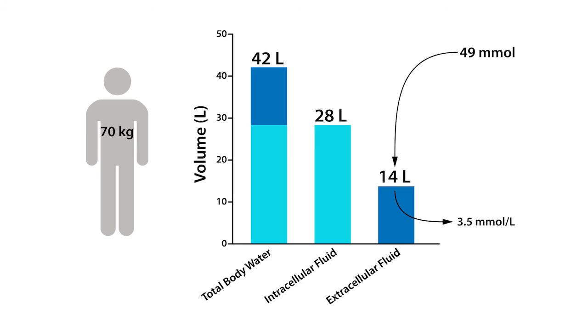If that person already has a serum potassium of 4 millimole per liter, the addition of an extra 3.5 millimole per liter would increase his serum potassium to 7.5 millimole per liter, which would cause him to become severely hyperkalemic.